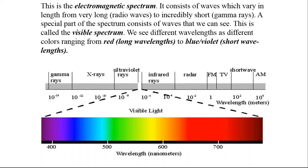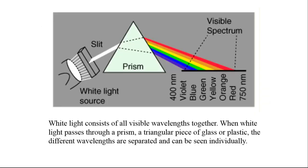This is the electromagnetic spectrum. It consists of waves which vary in length from very long radio waves to incredibly short gamma rays. A special part of the spectrum consists of waves that we can see. This is called the visible spectrum.